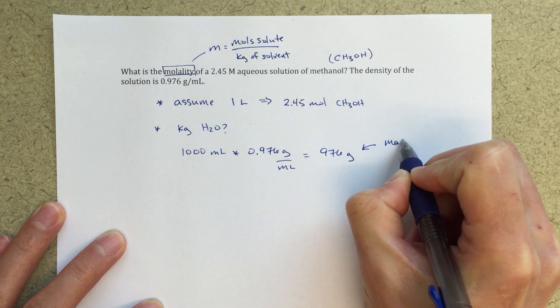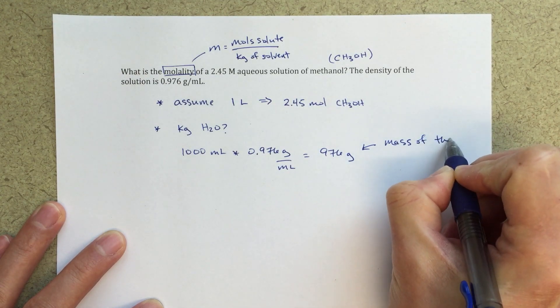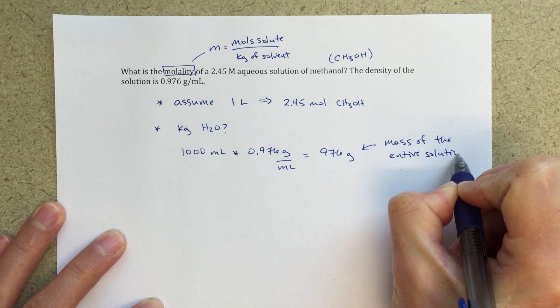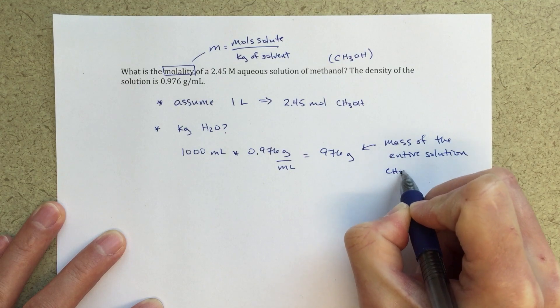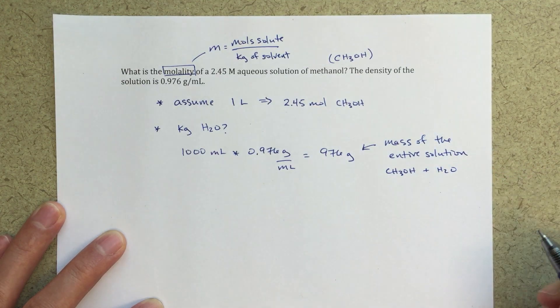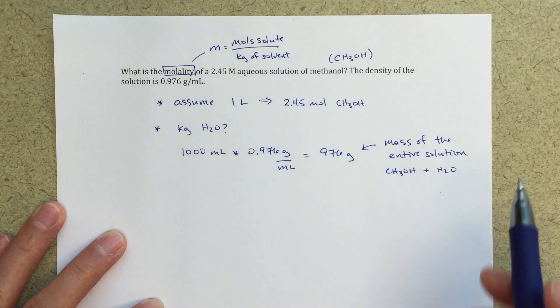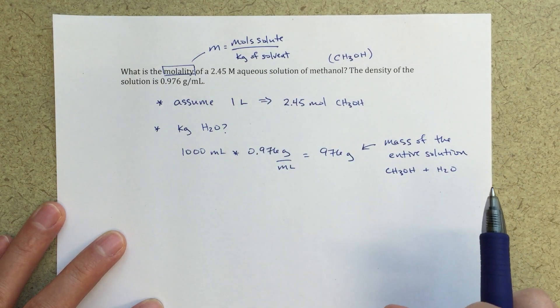This is going to be my mass of the entire solution. So this is the mass of CH3OH plus the mass of water, and we are just looking for the mass of water because I just want the kilograms of solvent for my molality.